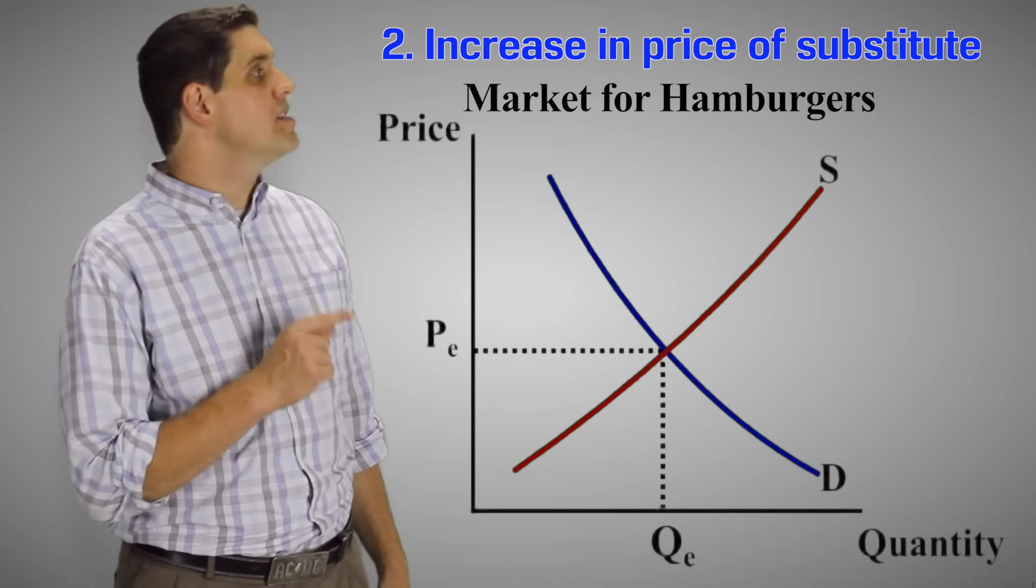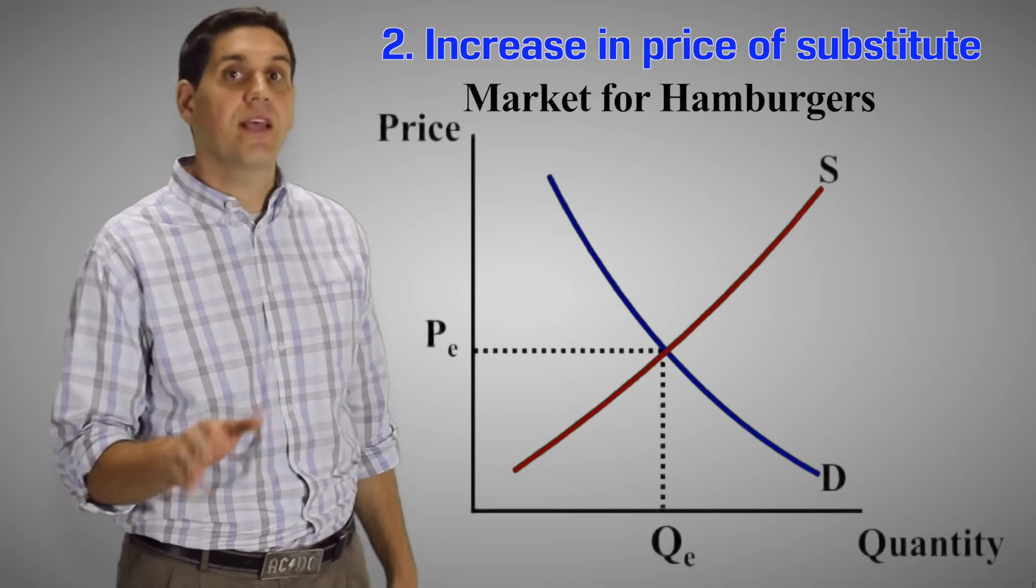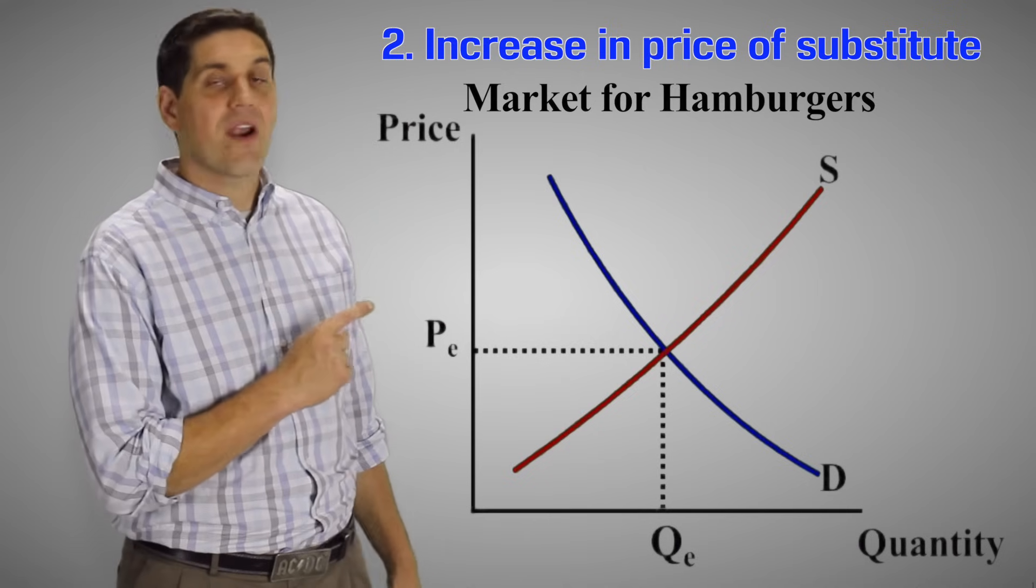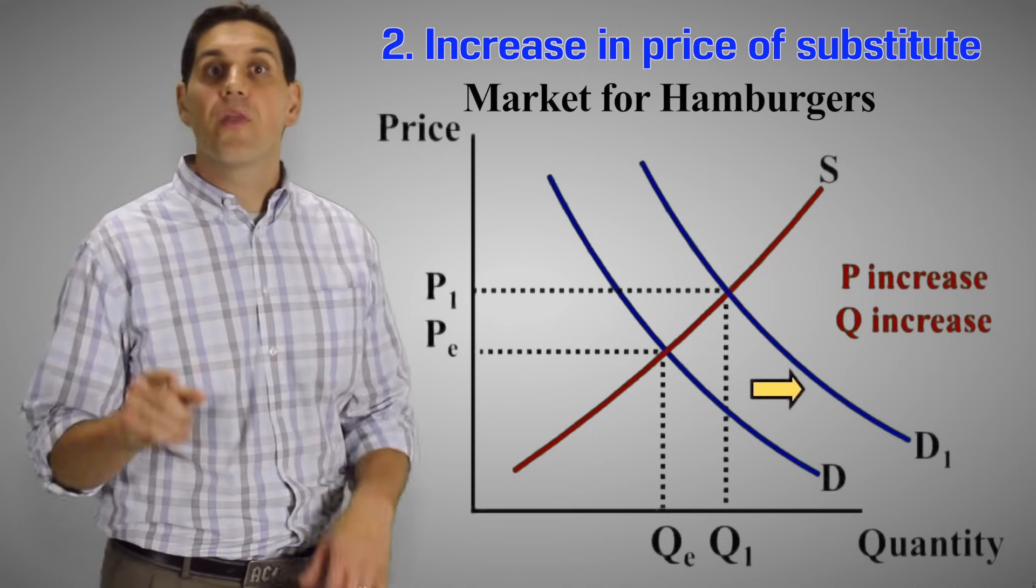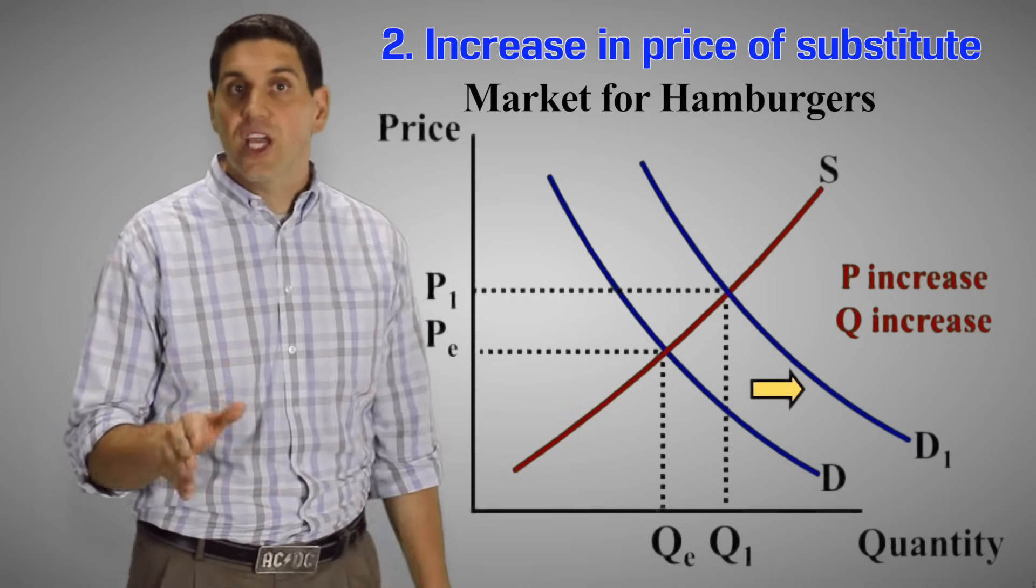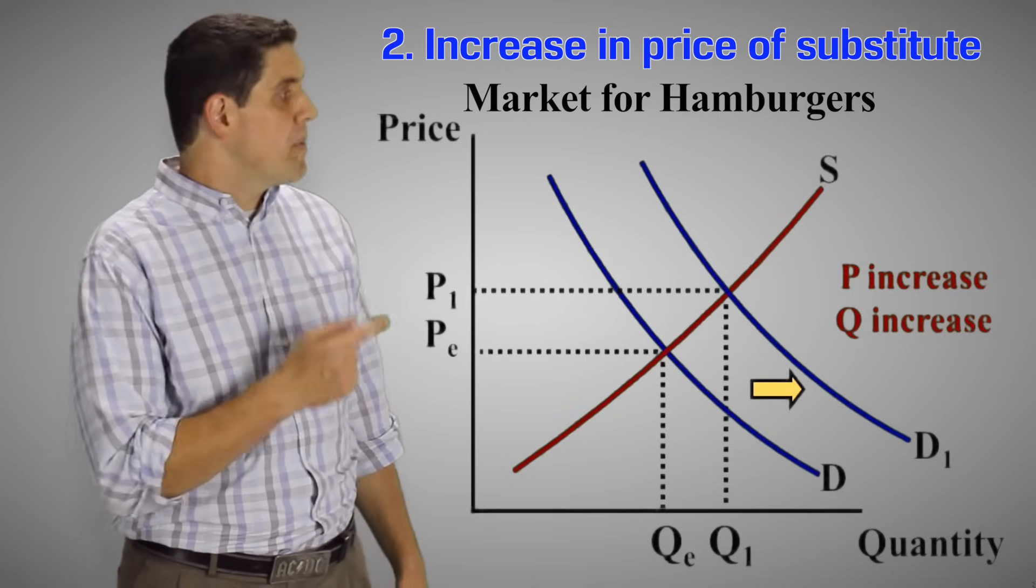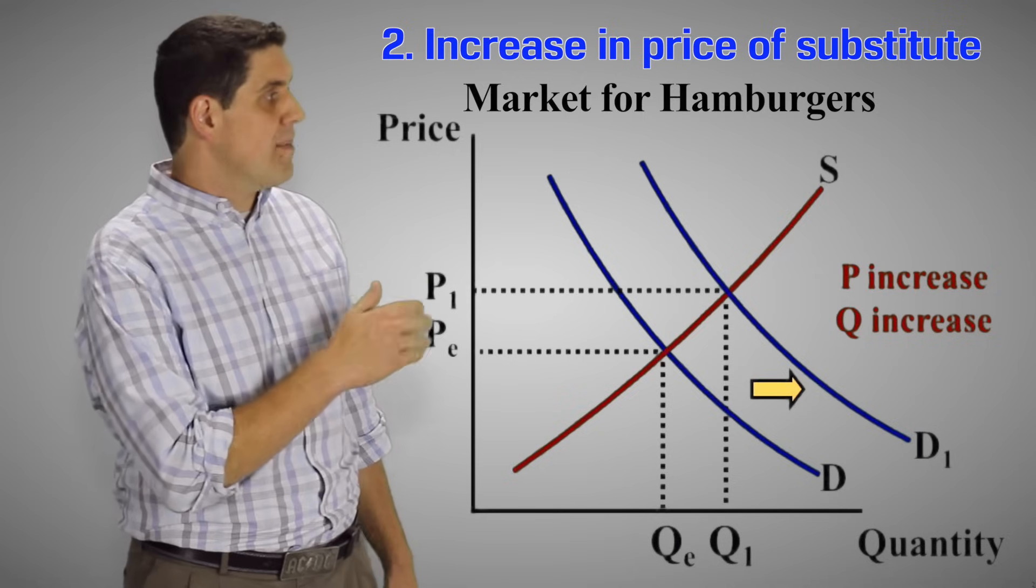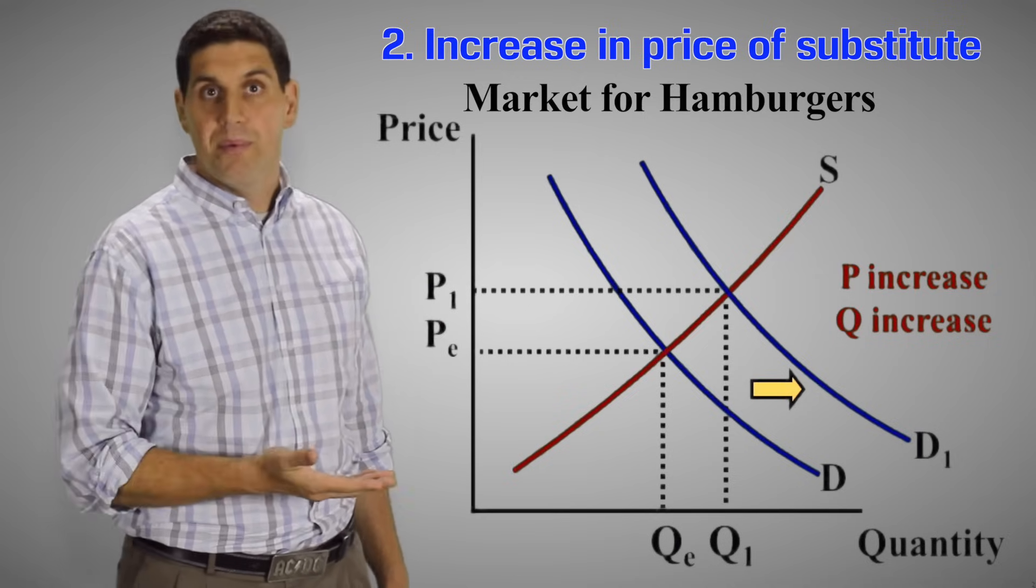For number two, an increase in the price of chicken sandwiches, a substitute is going to cause the demand for hamburgers to increase. Remember the price of related goods, substitutes and complements, is a shifter of demand. And if chicken sandwiches are more expensive, that means people are going to buy more hamburgers. So the demand for hamburgers shifts to the right. So price goes up and quantity goes up.